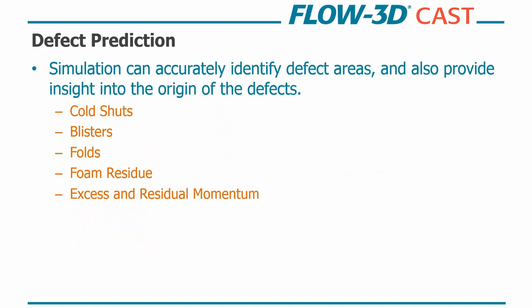So simulation in the Lost Foam processes can accurately identify defect areas, but also provide some insight into the origin of the defects. So with Lost Foam we're usually interested in cold shuts, blisters, and folds, and these are going to be due to converging metal fronts and also foam residue that's getting mixed in and concentrated within your metal front and into your metal material as well. And there's also the issue of excess residual momentum. Since you have high-speed metal entering the mold, there's a potential for turbulent mixing of the foam residue in the body of the metal. And this excess momentum appears in the form of secondary flow, so often like eddies or recirculations, that may mix liquid and solid foam products into the bulk metal. And this is another way to generate defects by trapping foam material.